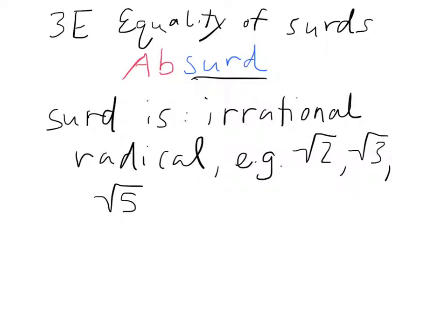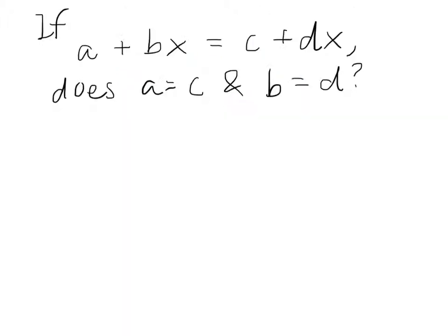A surd is an irrational radical, such as the square root of 2, the square root of 3, the square root of 5, etc. This is a somewhat complicated topic, but I'll try to present it simply.